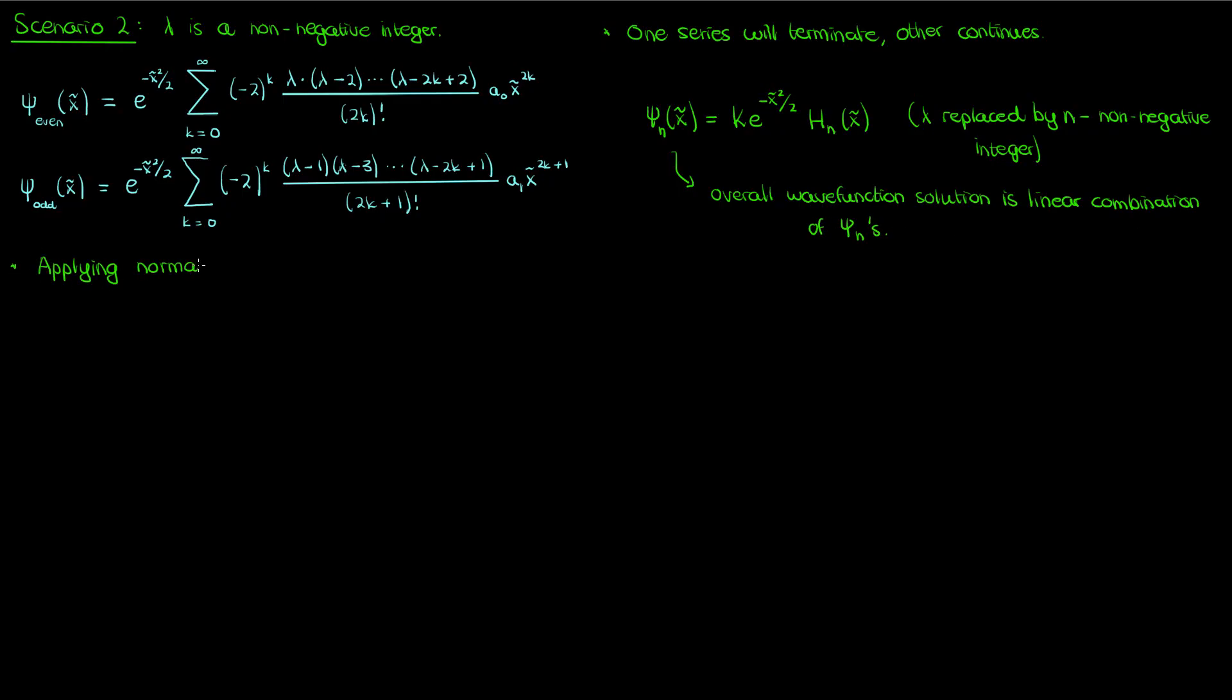If we now apply the normalization condition to these individual ψ sub n's, we can actually find the value of the constant capital K. I won't do that here because the normalization involves integrating the generic Hermite polynomials and using generator functions which will require a third part to my harmonic oscillator lesson. Nonetheless after normalization this is what you get for your ψ sub n. Note that I've now converted the dimensionless x tilde to the regular x.